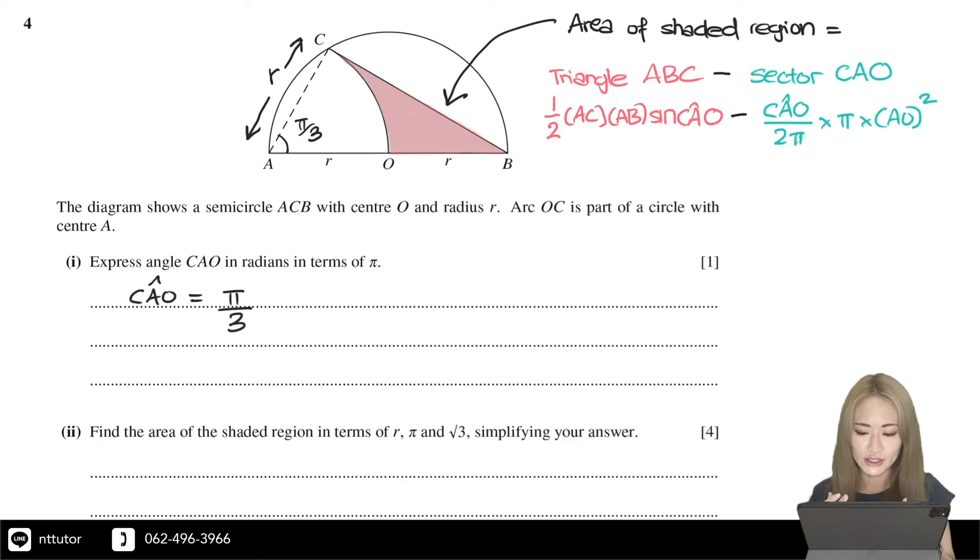So we have everything we need in order to calculate the area of the shaded region. We have AC, we have AB,